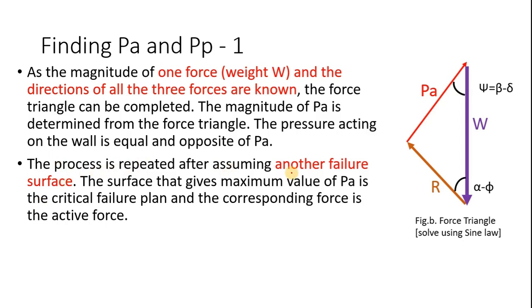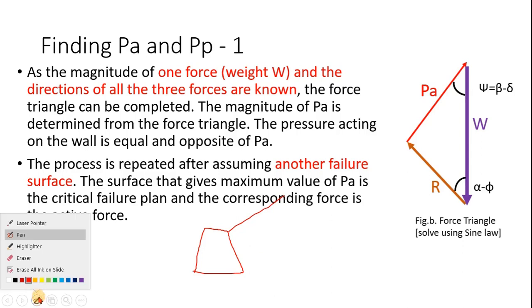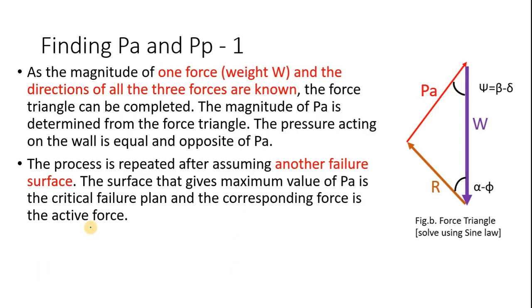The process is repeated after assuming another failure surface. First assume this failure surface, find the force triangle, find PA. Then again assume another failure surface. Remember all the failure surfaces are planar and pass through the toe. Repeat the process. The maximum value of PA, which surface gives the maximum value of PA, is the critical failure plane, and the corresponding force is the active force.